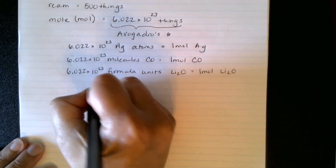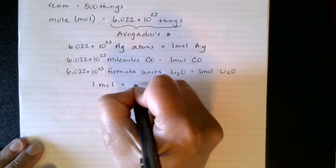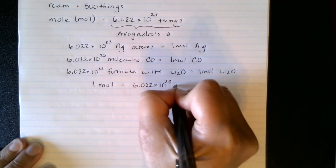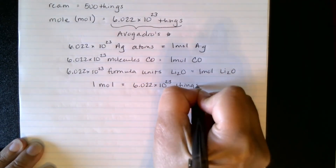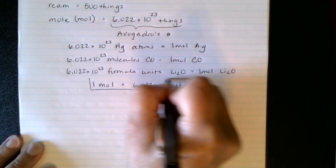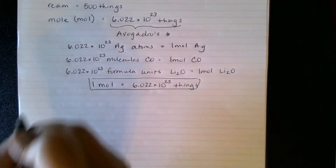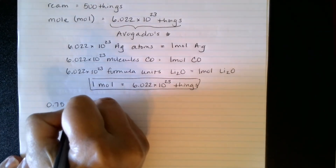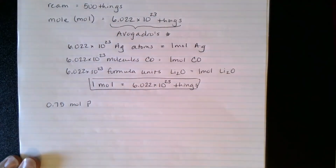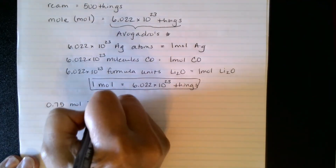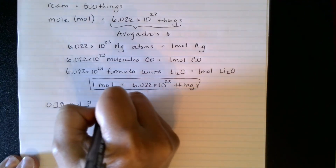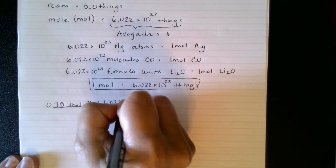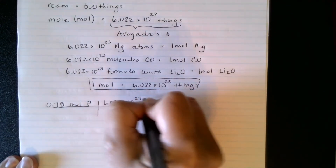So that means we have a conversion factor: one mole equals 6.022 times 10 to the 23rd things. Let's say we have 0.75 moles of phosphorus and we want to know how many atoms that is. So 1 mole is 6.022 times 10 to the 23rd atoms.